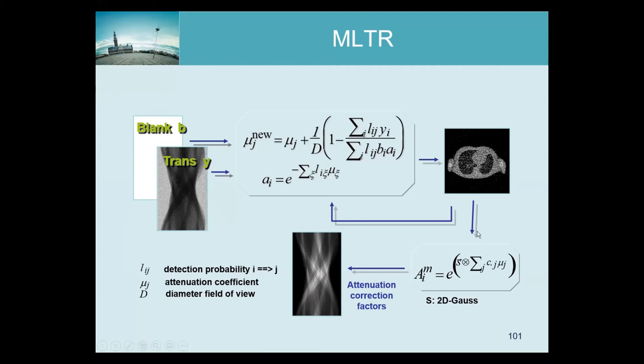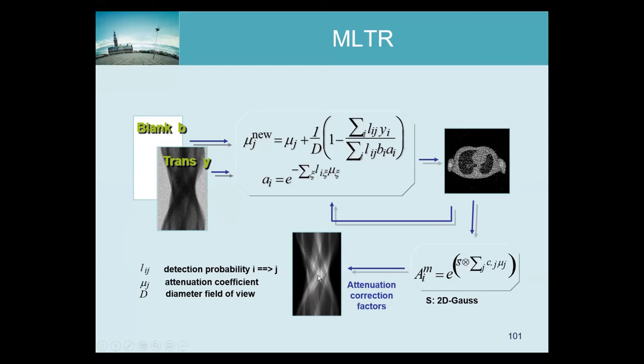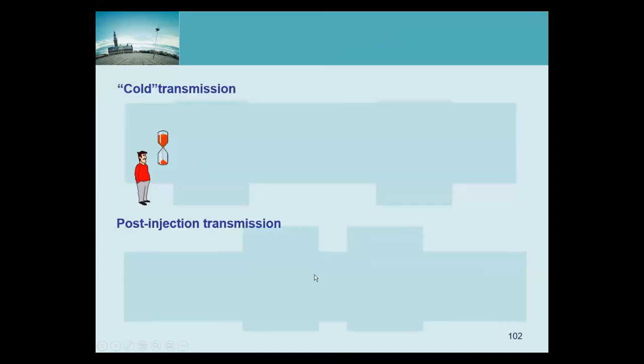If the reconstructed image is to be used only for attenuation correction, it's actually a good idea to iterate quite long and not worry too much about the noise, because that noise is highly negatively correlated. When you compute line integrals through those images, a lot of the noise will cancel. Even if the image looks horrible, if you forward project it, you get a pretty good sinogram that is far less noisy than the original one. You can also do a little bit of smoothing, then compute the exponent, and get the attenuation correction sinogram.